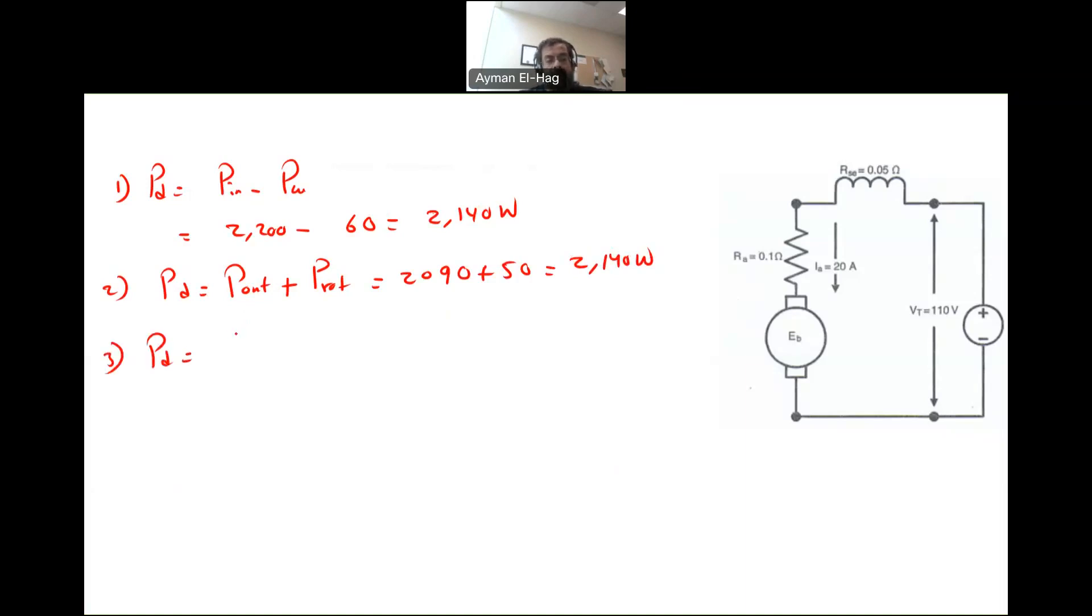Number three, Pd is also equal to EB, back EMF times IA. We know IA, I need to find EB. What is EB? EB, one KVL we have here is equal to VT minus IA times R shunt plus RA. We have all the values: 110 minus 20 times 0.05 plus 0.1, and this will give me a voltage equal to 107.